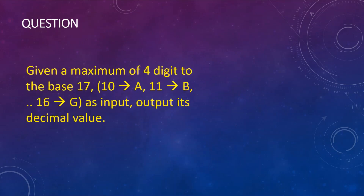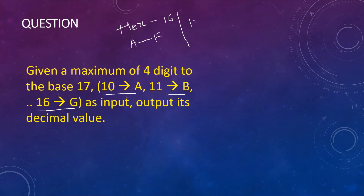The question is as follows: given a maximum of four digits in base 17, where 10 is represented as A, 11 as B, and so on up to 16 represented as G. This is similar to the hexadecimal number system, except that hexadecimal uses base 16 with alphabets A to F, whereas here the base is 17, so the alphabet G is also included. The input is given in base 17 and we have to convert it to base 10.